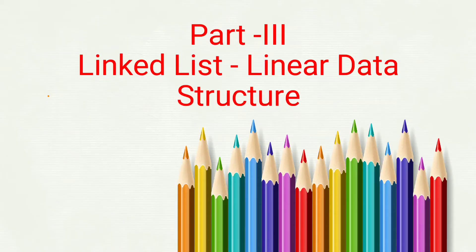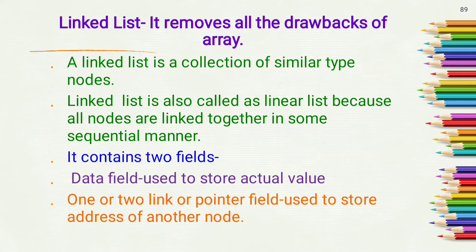Hello students. From this video I am starting Part 3 of data structure subject, that is linked list, which is also an example of linear data structure. Linked list removes all the drawbacks of array, as we saw in last videos. There are various drawbacks of array like contiguous memory allocation, needing to know the size of array in advance, and insertion and deletion operations being time consuming.